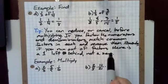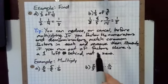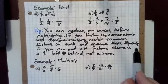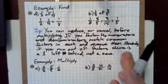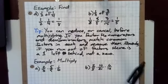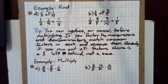If you factor the numerators and denominators and match common factors in each and remove them, you match common factors in the numerator with common factors in the denominator. If you run out of factors, there's a one left behind, not a zero.